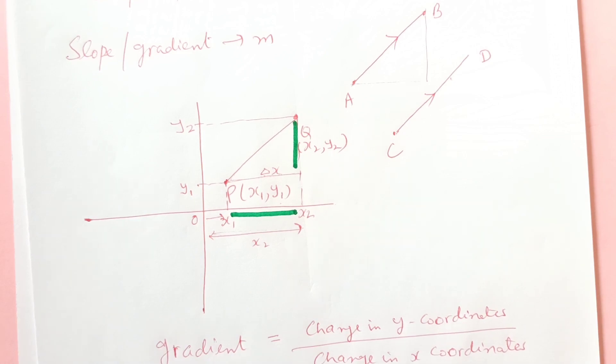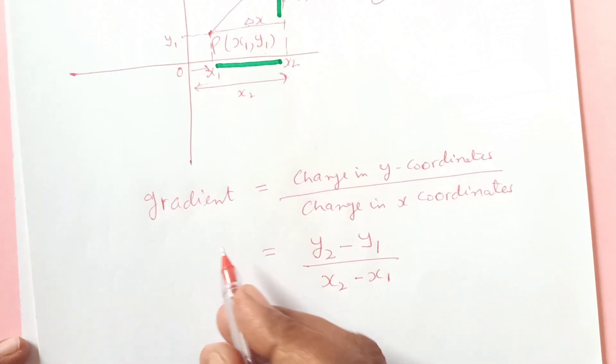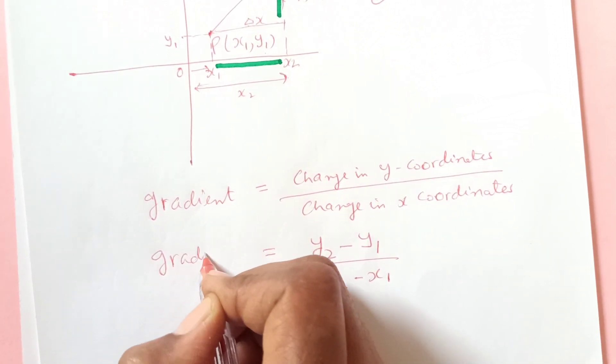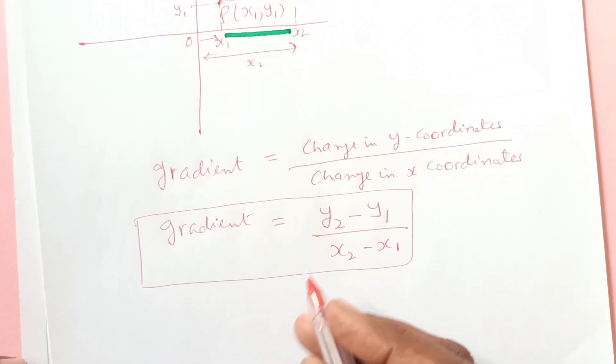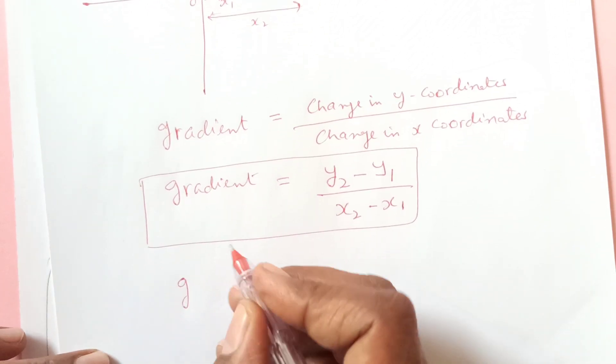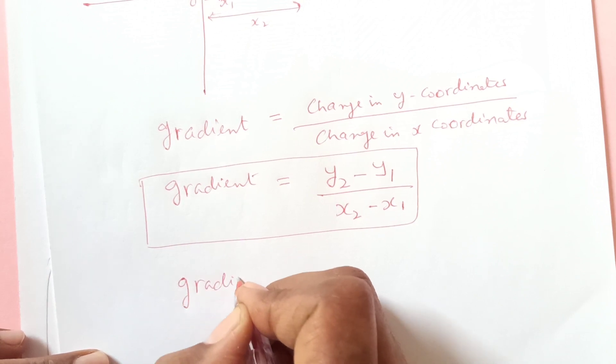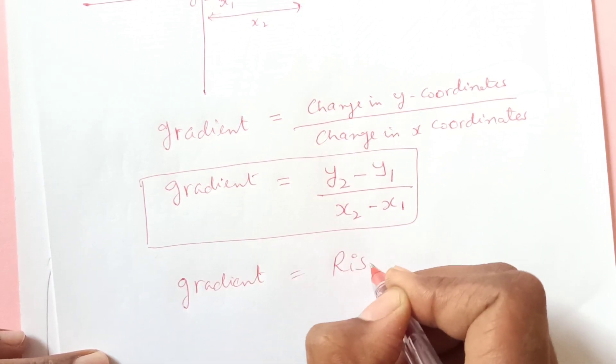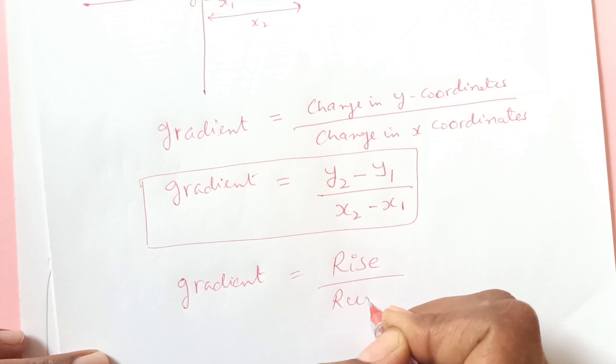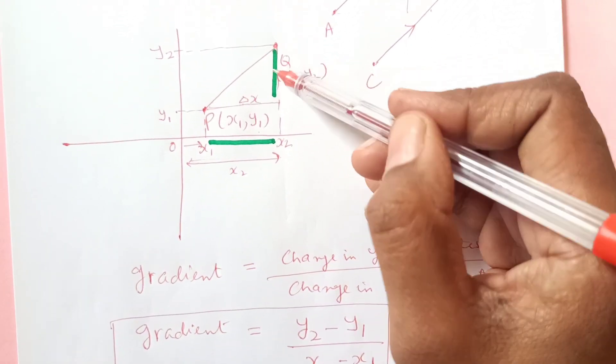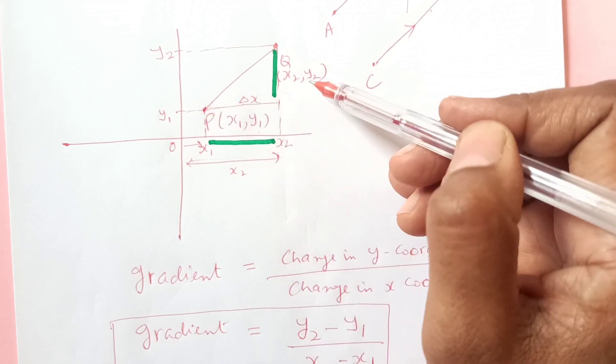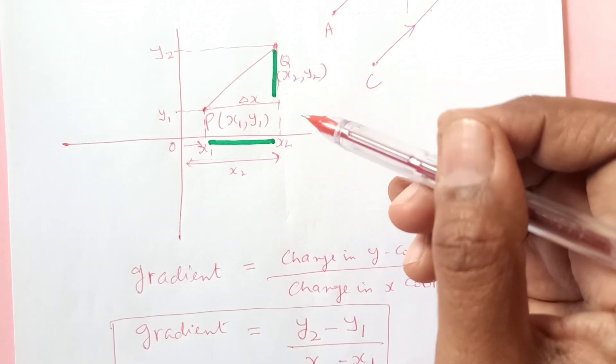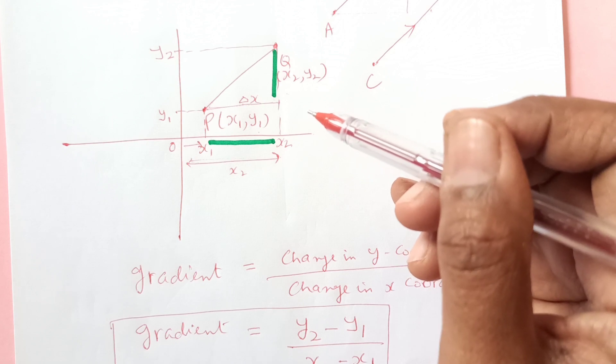So basically what is happening here, the gradient is rise over run. So another way to find this is one formula of the gradient, and also this gradient is equal to rise over run, so how much the line raised and how much it is the run along the x axis. So this formula we can use to find out the gradient.